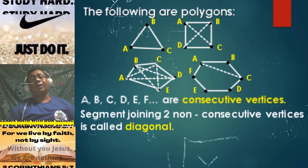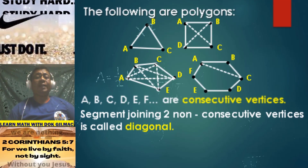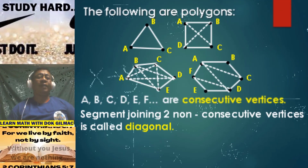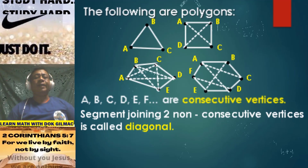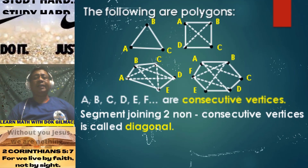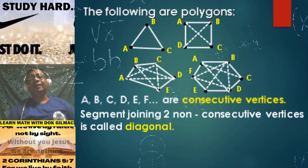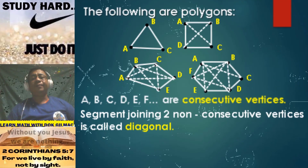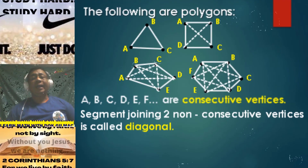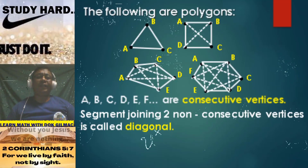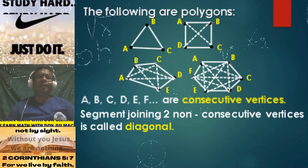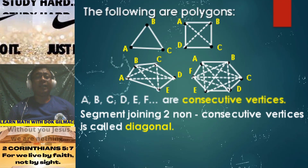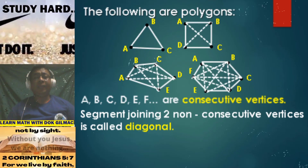For the given hexagon, if you are to join vertex A and vertex C, we have one diagonal. Vertex F and vertex D, another diagonal. Vertex A and vertex D, another diagonal. Vertex B and vertex E, another diagonal. Vertex B and D, Vertex A and E, and Vertex C and E are each another diagonal. Joining vertex C and F is another diagonal. There are actually 9 diagonals that are formed in the given hexagon.